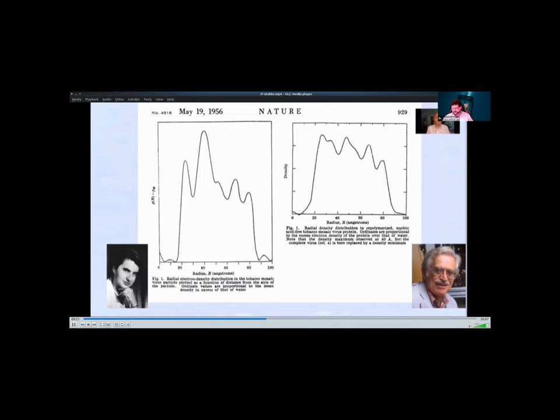These single derivatives were enough for Rosalind and Don to calculate radial density distributions, that is, electron density as a function of distance from the axis of the viral helix. And as you can see, the radial density distributions are almost identical, except for a large peak 40 angstroms from the axis. So it was clear that the RNA followed the coat protein helix at a radius of 40 angstroms. In 1956, they published companion papers in Nature describing these very exciting results.